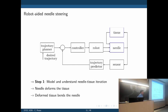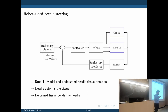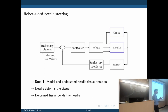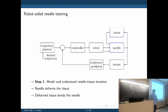To develop a control system for this plant, we need a model. We need to understand the dynamics of needle-tissue interaction: how does deflection occur and what are the consequences? Step one is to model and understand the interaction between the needle and the tissue.